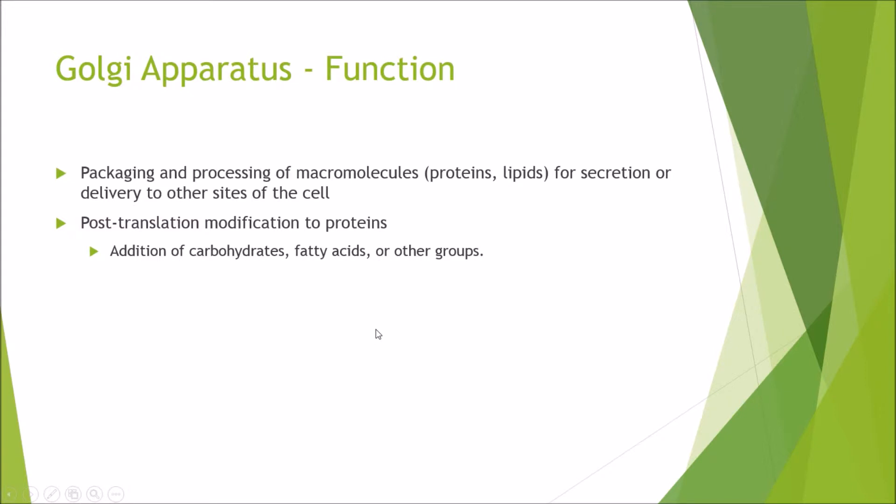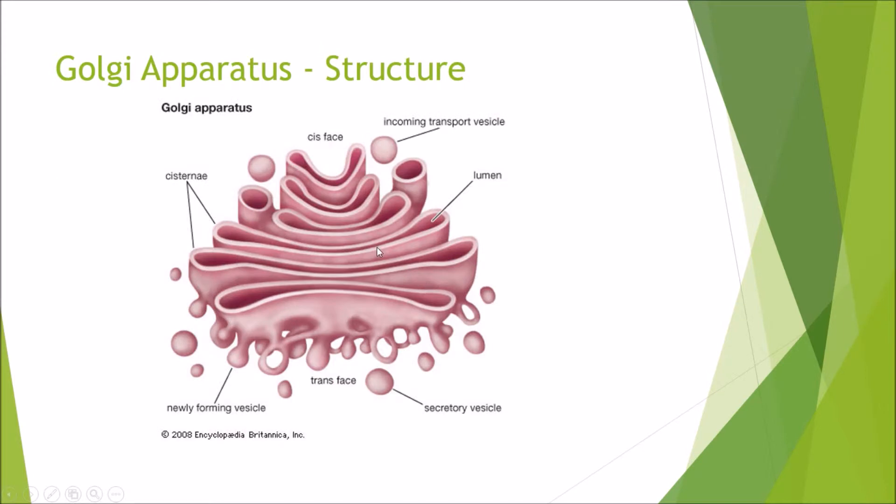So the function of the Golgi apparatus is a packaging and processing unit of macromolecules, so for example proteins and lipids for secretion or delivery to other sites of the cells. What this means is basically post-translational modification to proteins. So for example, you can add carbohydrates, fatty acids, or prosthetic groups or other groups to the proteins to give us a particular function. So for example here, this is where you will get a protein coming in in this transport vesicle, it will go through here, and out it could be released as a glycoprotein.